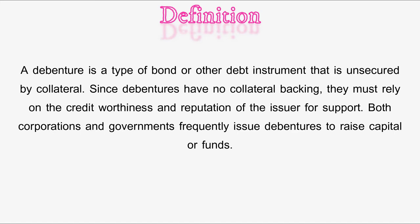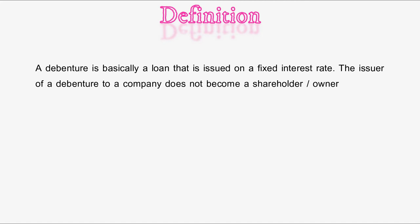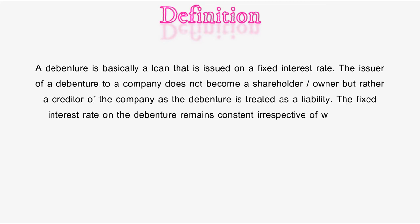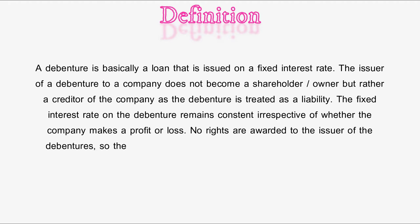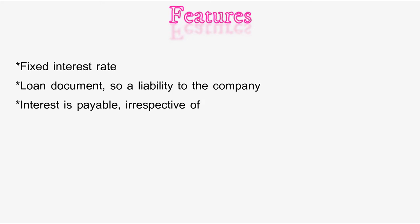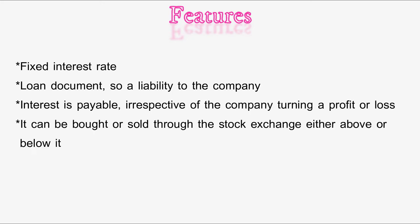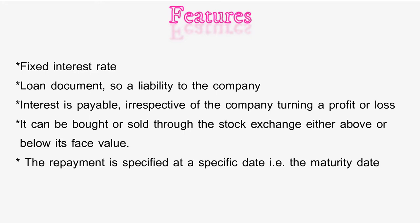Debentures are issued to raise capital or funds. A debenture is basically a loan issued at a fixed interest rate. The issuer of a debenture to a company does not become a shareholder or owner, but rather a creditor of the company, as the debenture is treated as a liability. The fixed interest rate on the debenture remains constant irrespective of whether the company makes a profit or loss. No rights are awarded to the issuer, so the issuer has no rights to the decision-making of the entity. Features of a debenture include: fixed interest rate, and it is a loan document — so a liability to the company.